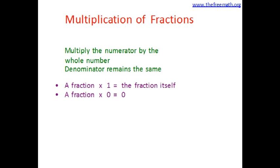Now what if the whole number is 0? That means you are multiplying the numerator by 0. Zero multiplied by anything is 0, so if the numerator is 0 the fraction would be 0. So the answer is 0. To summarize: we multiply a fraction by 0, the answer will be 0; we multiply a fraction by 1, the answer will be the fraction itself.